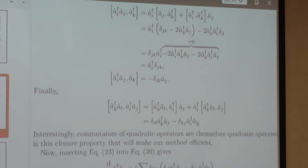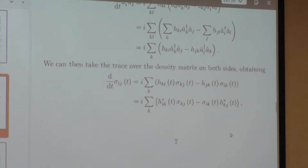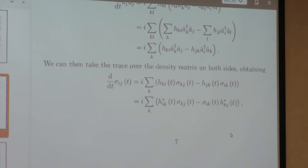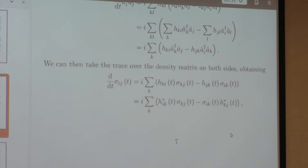What I want to point out about this calculation is the reason it works: there is a closure property. The set of quadratic second-quantization operators is closed under time evolution with a quadratic Hamiltonian. That closure property allows you to do dynamics without going outside the set of quadratic operators, and that's what makes this calculation efficient. Once you introduce a non-quadratic Hamiltonian, this will break.